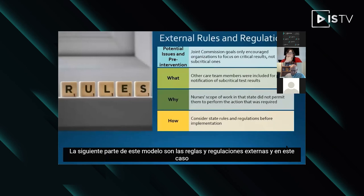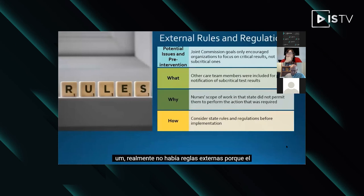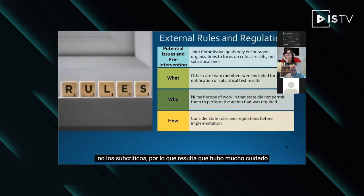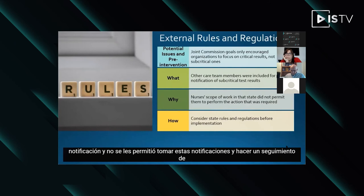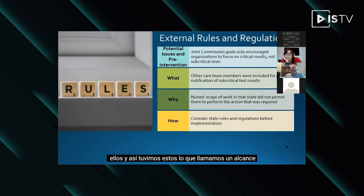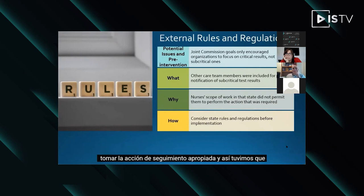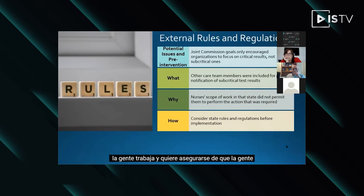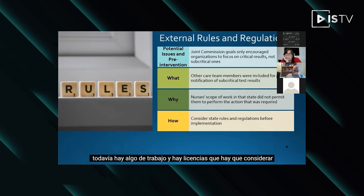The next part is the external rules and regulations. There were really no external rules here because the Joint Commission only talks about critical tests, not subcritical ones. It turned out that there were a lot of care team members not included for patient notification and not allowed to take these notifications and follow up on them — nurses weren't allowed to actually call the patients and take appropriate follow-up action. You need to think about state or national rules and regulations about how people work to make sure the people are allowed to do the work you're trying to assign them, keeping in mind their licenses.